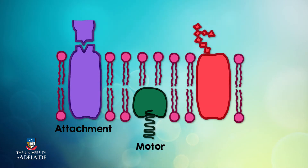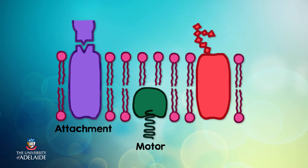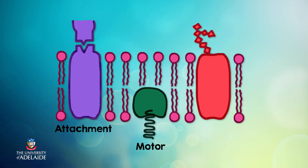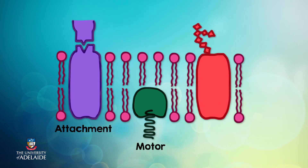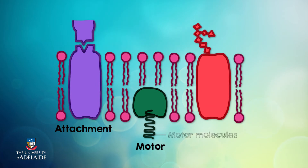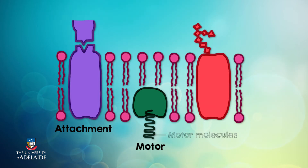Motor molecules are proteins that produce movement in a cell. These proteins are found in cells that crawl around body tissues, like defense cells that move about the body looking for foreign particles to destroy. Cell movement occurs when filamentous molecules in the cytoplasm, like actin and myosin, pull on the motor molecules in the plasma membrane.